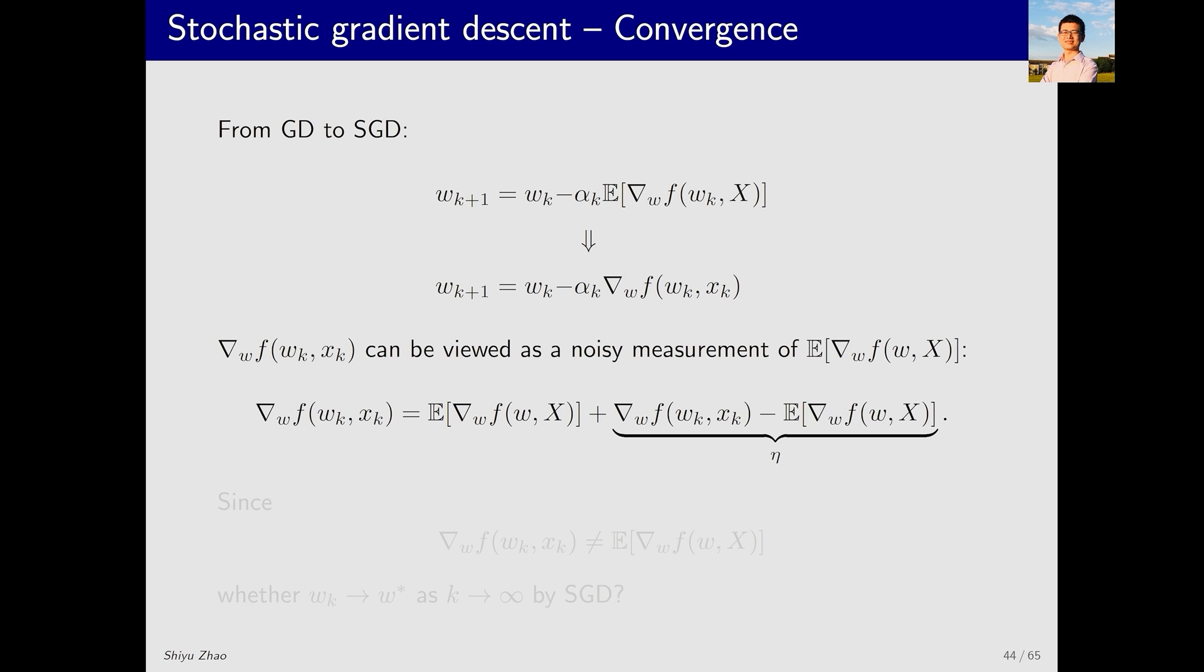This gradient here has a name. It is called stochastic gradient, whereas this one is called true gradient. If we use the stochastic gradient to replace the true gradient, then there is certainly an error between them. They satisfy this equation. The stochastic gradient equals the true gradient plus this error. In this case, can we guarantee that SGD can successfully find the optimal solution w*? The answer is yes. Now let's see the proof.